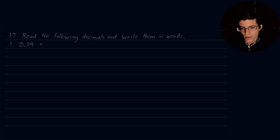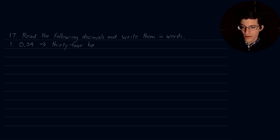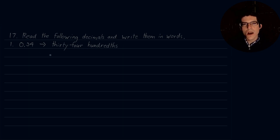You can use an arrow or the word 'is' to show the translation. 0.34 is thirty-four hundredths. So, how did I derive that?